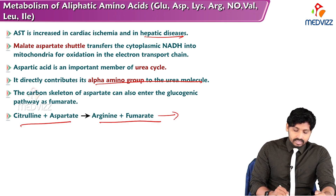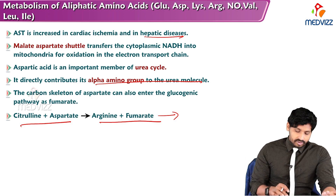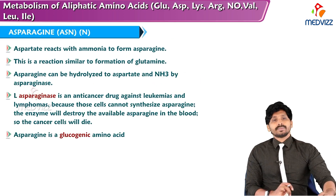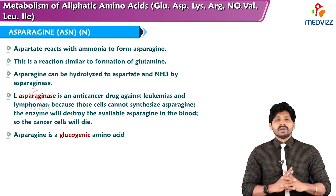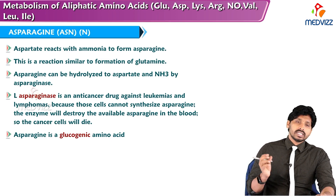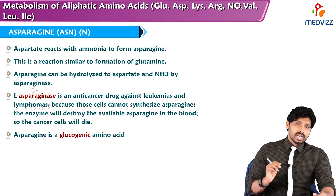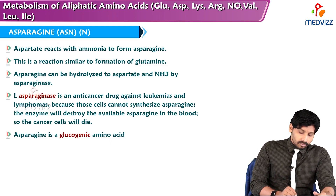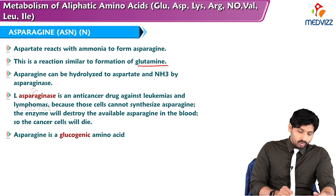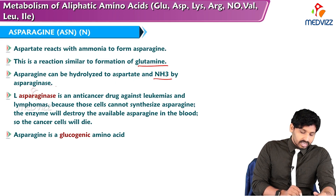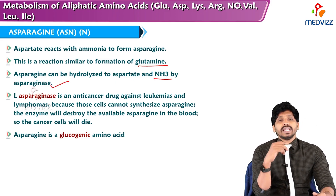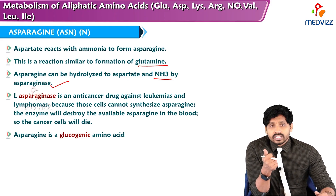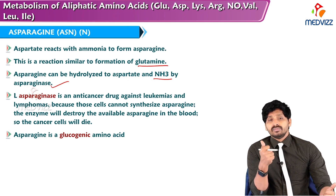Citrulline and aspartate form argininosuccinate and fumarate; fumarate enters the TCA cycle which feeds into gluconeogenesis. Asparagine is the amide form of aspartic acid, formed by addition of ammonia to aspartic acid — similar to glutamine formation. Asparagine can be hydrolyzed to aspartate and ammonia by asparaginase in the liver.